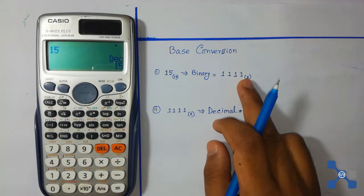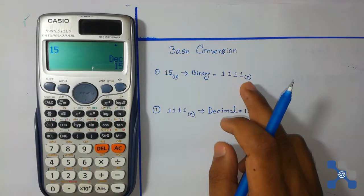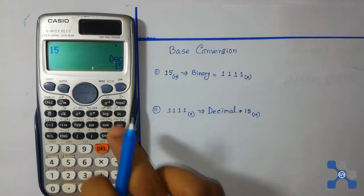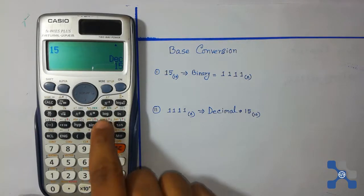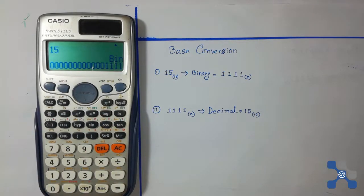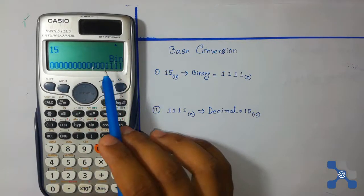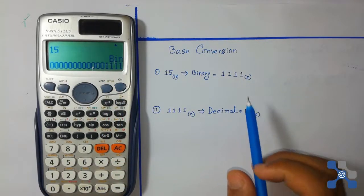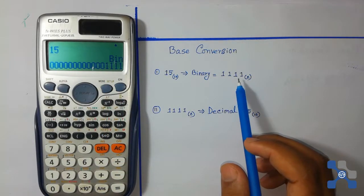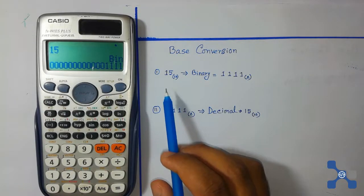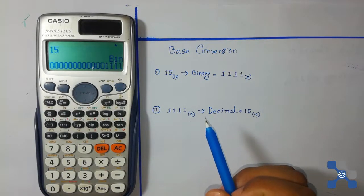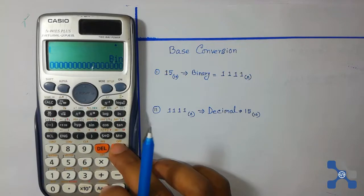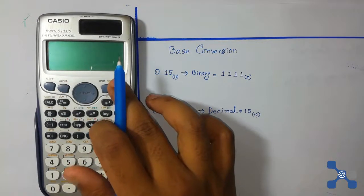To convert to the binary numbering system, press this button. Now we can see that 1111 is the binary number of 15. Then press the AC button — we see that the calculator is no longer in normal mode.